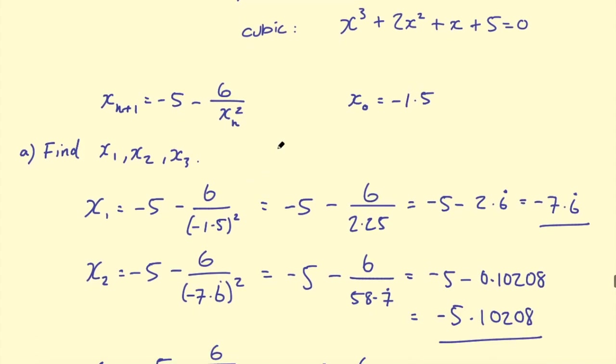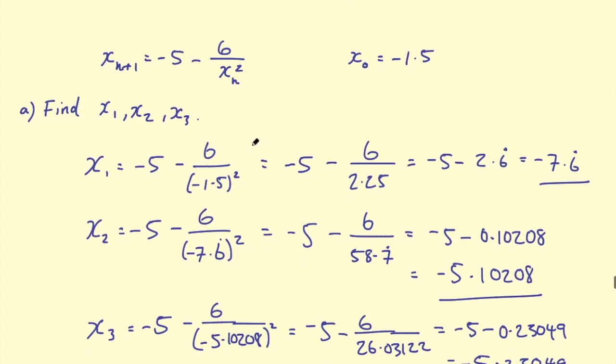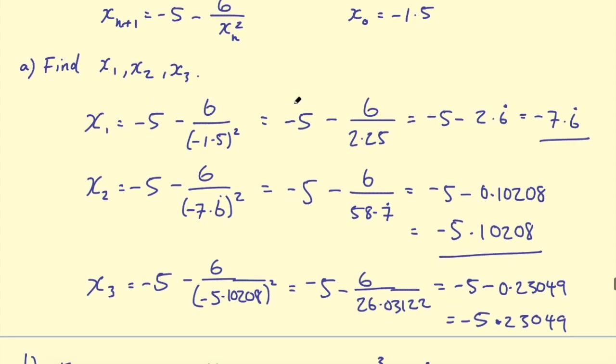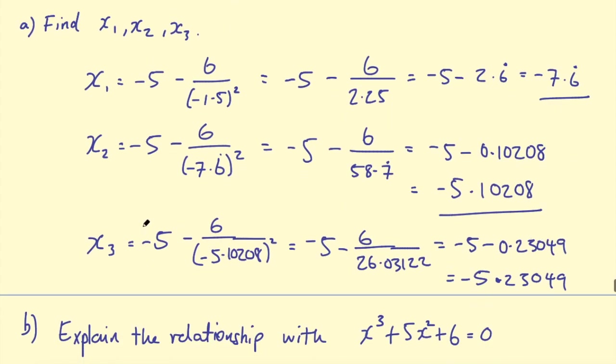You can see that just as the iPhone takes last year's model, improves it, and comes up with a better solution, in iterations we take the first term, put it back into the formula, substitute it back to work towards the final solution. In this case, the third term in this iteration is -5.23049.